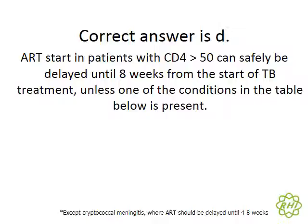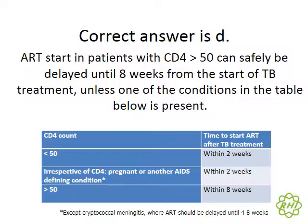Getting back to Denio, her CD4 count is 320. With a CD4 over 50, ART can safely be delayed for as much as eight weeks from the start of TB treatment. One other condition to highlight is the pregnant woman: regardless of CD4 count, we would start ARVs within two weeks after starting TB treatment, because we want to protect the baby and will accept the higher risk of IRIS.